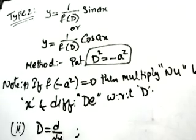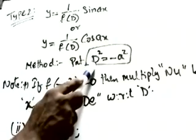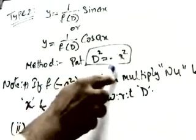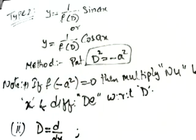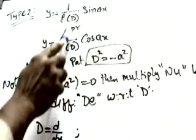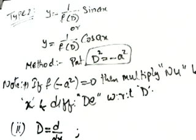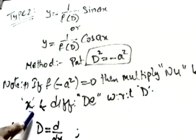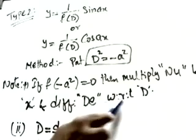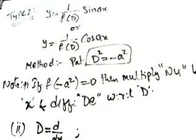When we get the function in terms of sine and cosine, the method is to substitute d² = -a². If f(-a²) equals zero, we cannot proceed because 1/0 is undefined. In that case, the method is to multiply the numerator by x — same as the previous method — and differentiate the denominator with respect to d.